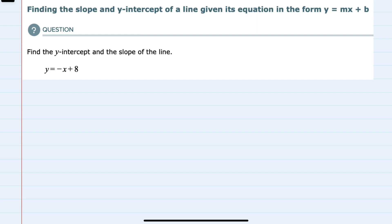We're asked to find both the y-intercept and the slope of this line, and since it is in the form y equals mx plus b, the y-intercept can be found by identifying b.